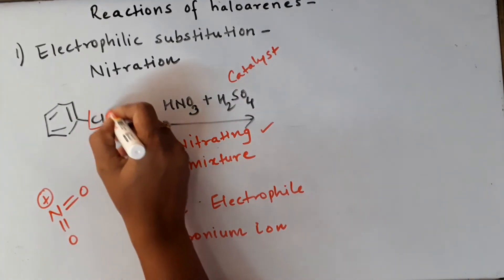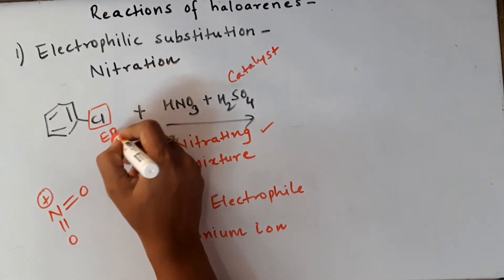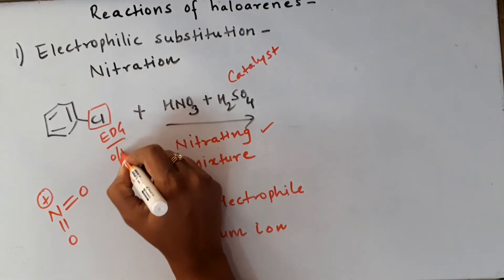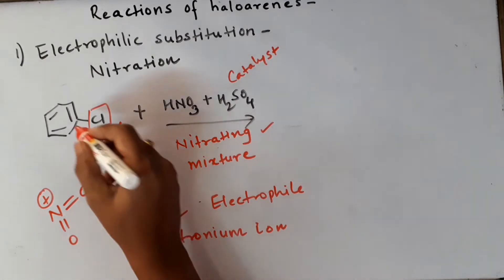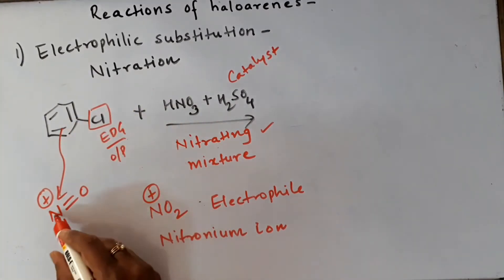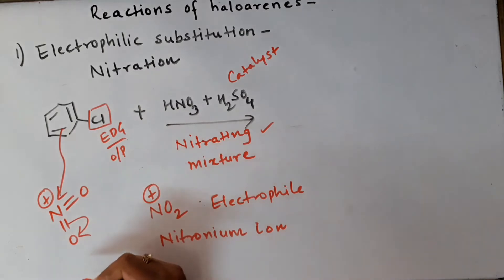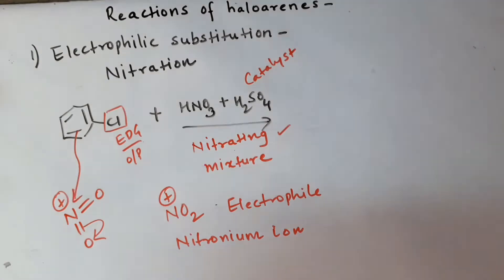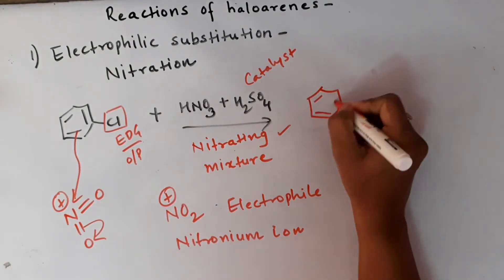So over here again the same logic - chlorine is an electron donating group via resonance and hence it is going to be ortho-para directing group. When benzene attacks the nitronium ion, the electron gets relocalized on oxygen atom. Now let's have a look at how the reaction takes place and how we get products.